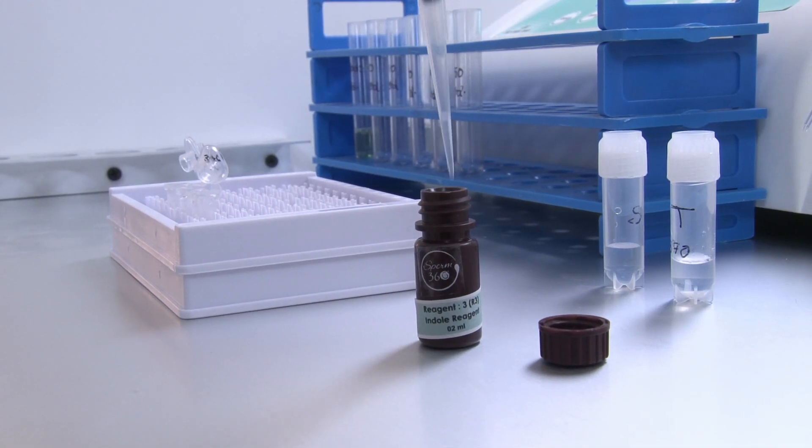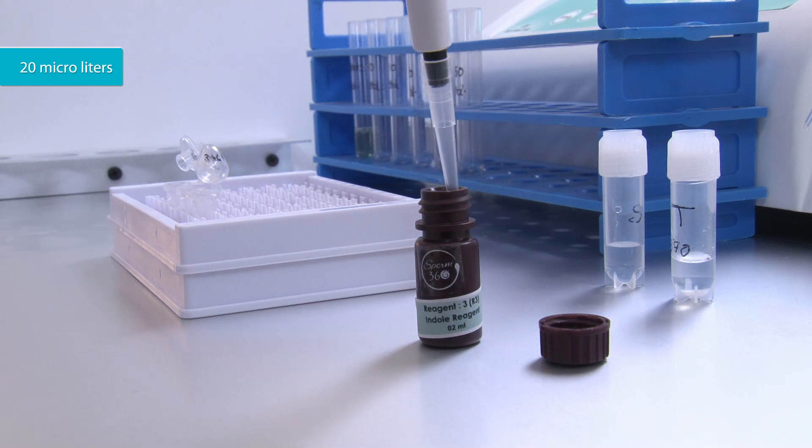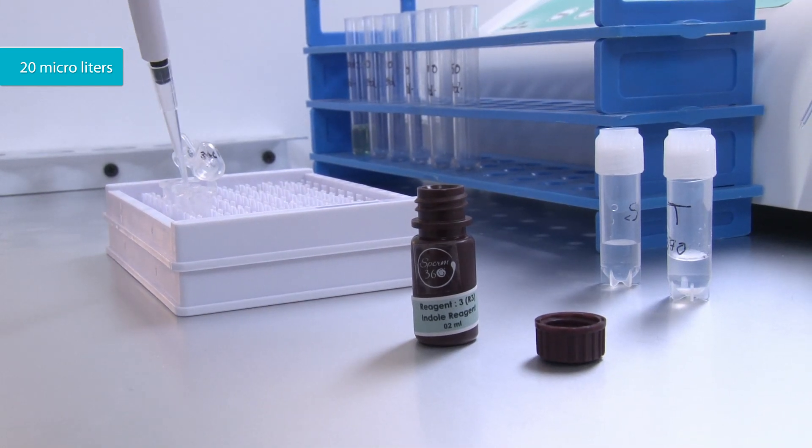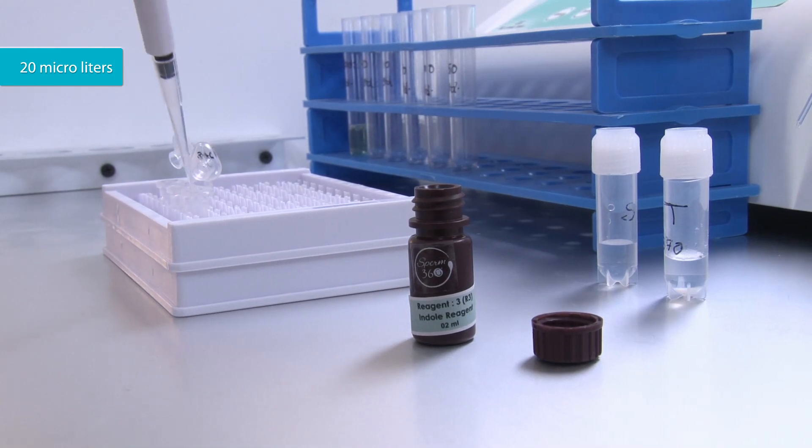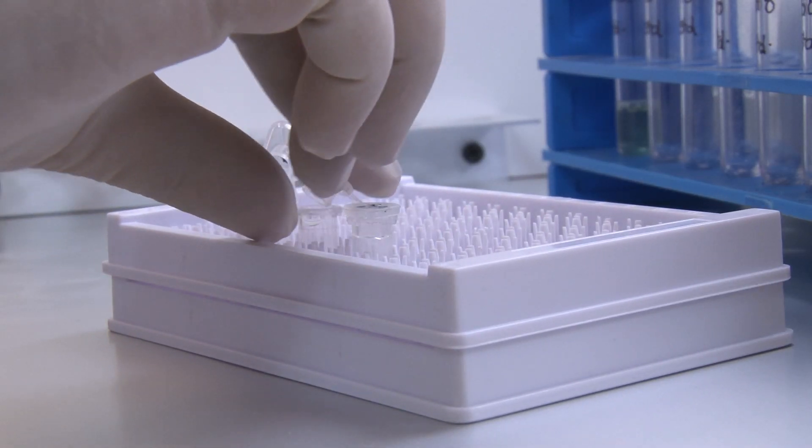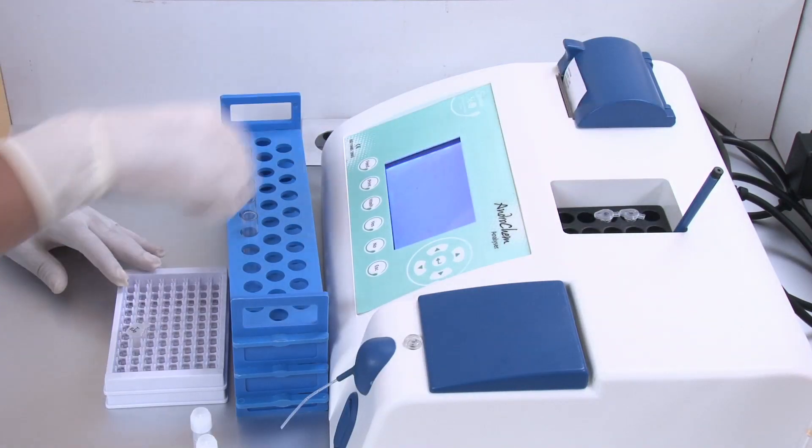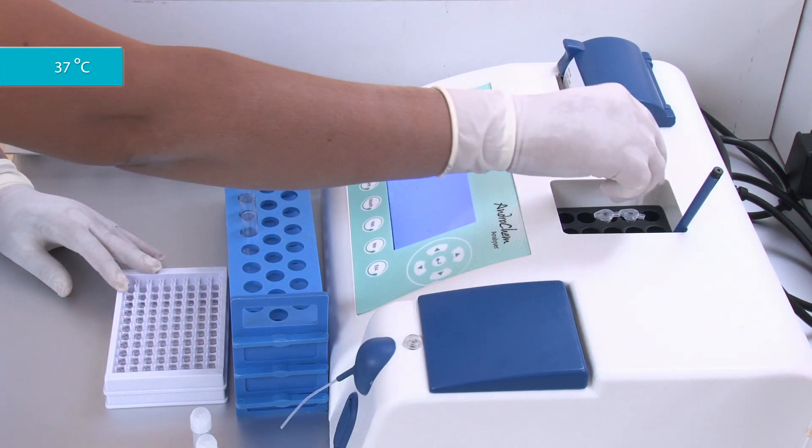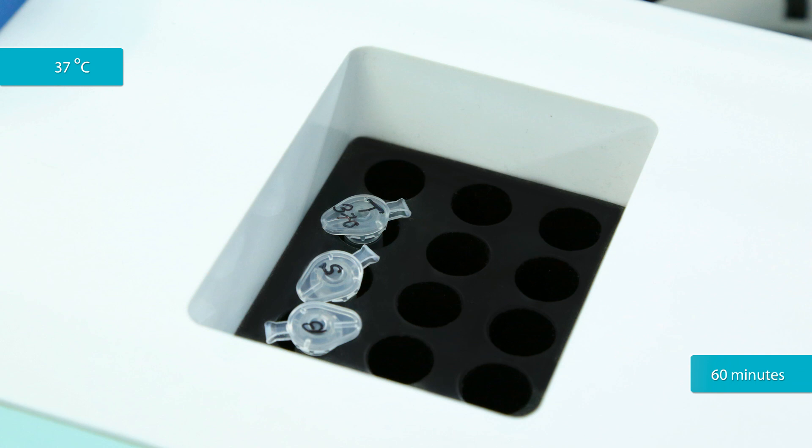Add 20 microliters of Reagent 3 to all the tubes. Seal the tubes. Incubate the tubes at 37 degrees Celsius for 60 minutes.